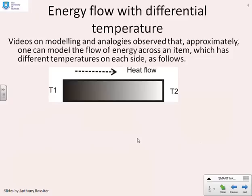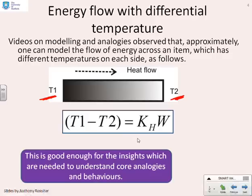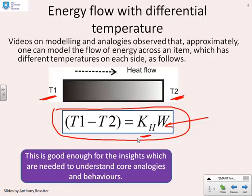What about energy flow? You will remember from previous videos on models with constant relationships that we looked at energy flow through conductors. If you had temperature T1 at one end of a conductor and temperature T2 at the other end, then the flow rate of energy down this conductor is given by the equation T1 minus T2 equals some constant KH times the flow rate W. This is good enough for the sorts of insights and analogies we want to develop in these videos.